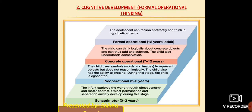When we talk about the sensory motor stage, this stage is from zero to two years. In this, the infant explores the world through direct sensory and motor contact. Object permanence, separation, and anxiety develop during this stage.